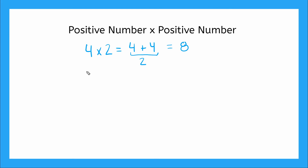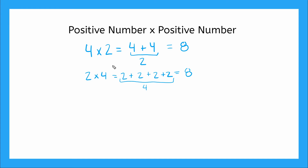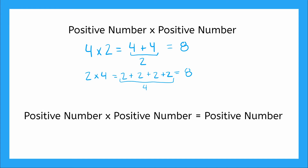Now, what if we had written it as two times four? This is really saying two added together four times, or two plus two plus two plus two. How many do we have four times? This gives us the same number, eight. So from this, we can tell that a positive number times a positive number is also a positive number.